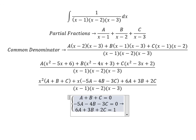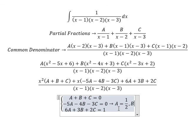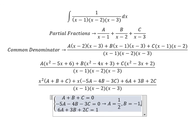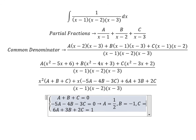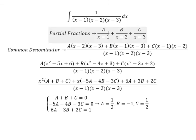So we have A equals one-half, B equals negative one, and C equals one-half. And now we put the values of A, B, C in here.